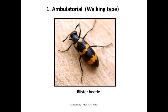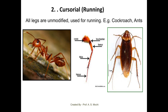The first is the ambulatorial type of legs — walking type of legs used for walking purpose — found in case of beetles or blister beetle. The next is the cursorial type of legs, modified for running purpose. Here all legs are unmodified and used only for running, present in case of cockroach and ants.